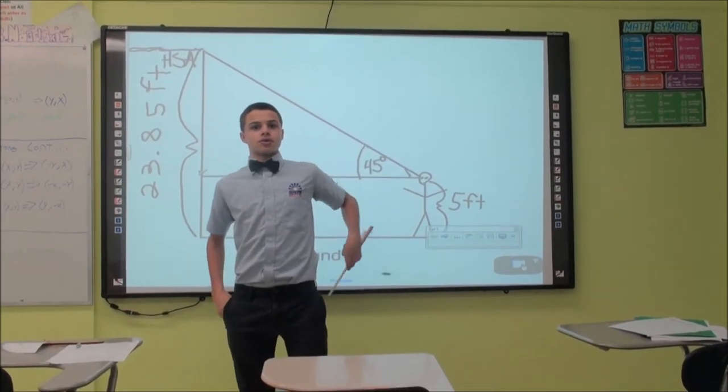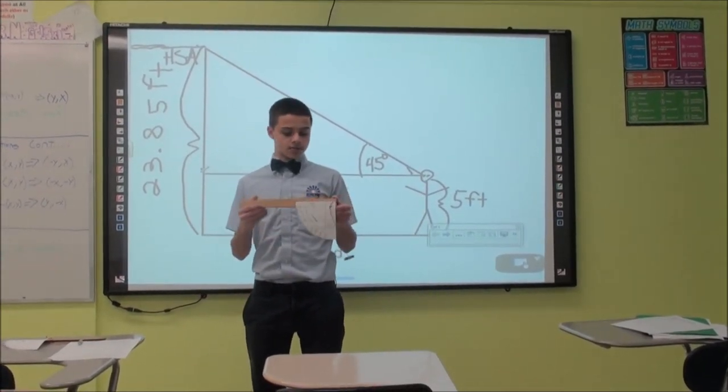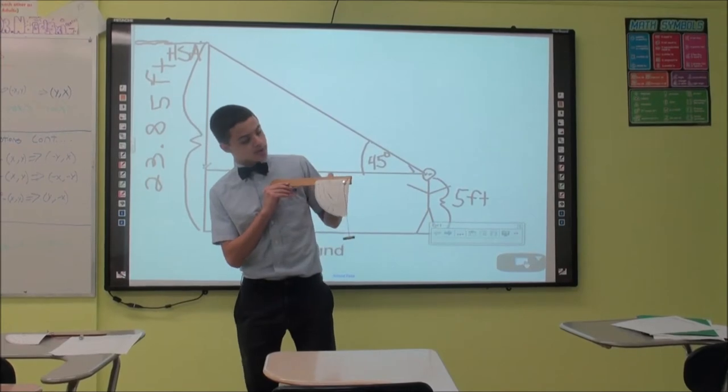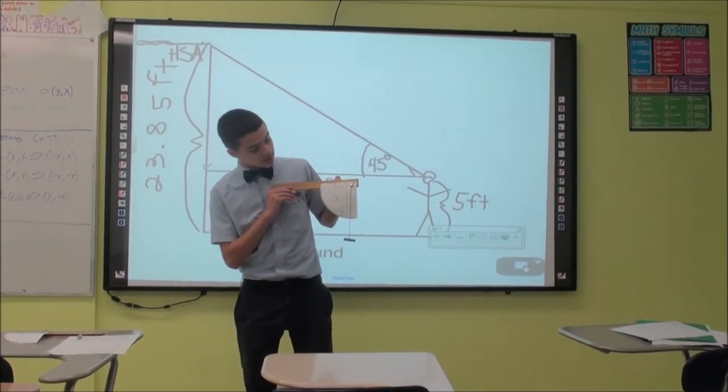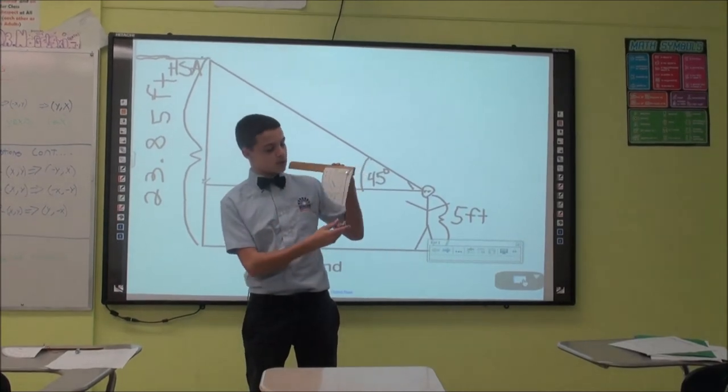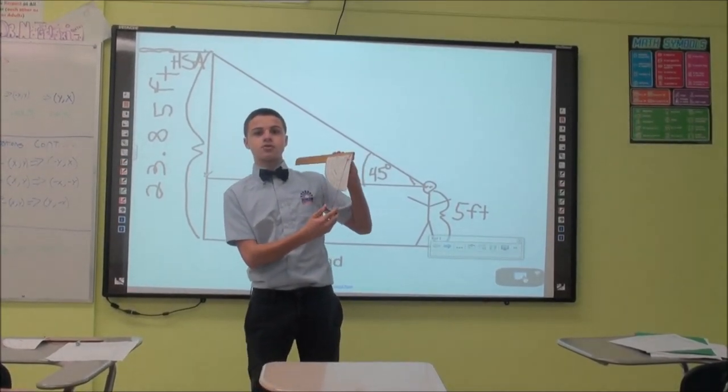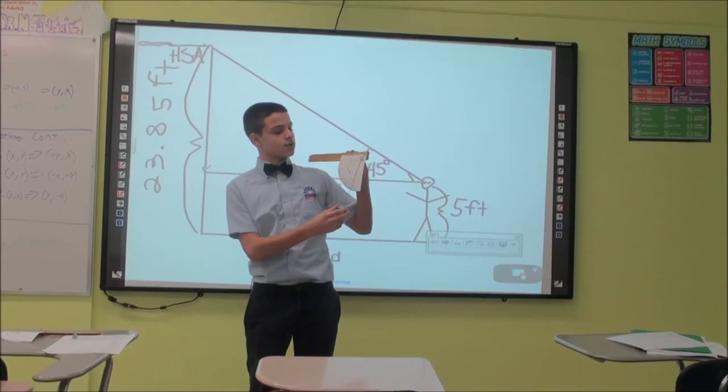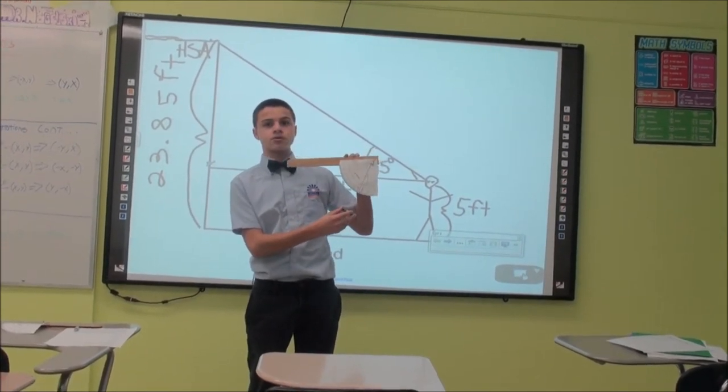In order to make the astronomical quadrant, you would use a straight object, a quadrant labeled 0 to 90 degrees on it, and a string and a weight. And you would use gravity to form a straight line perpendicular to the ground.